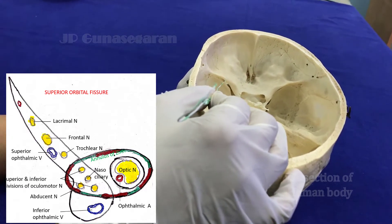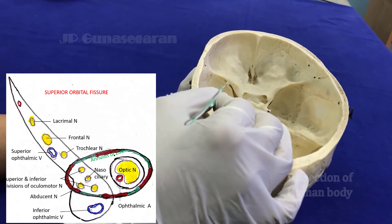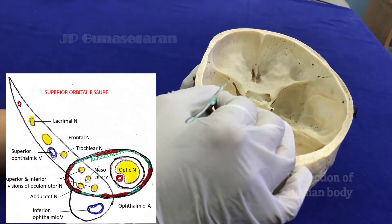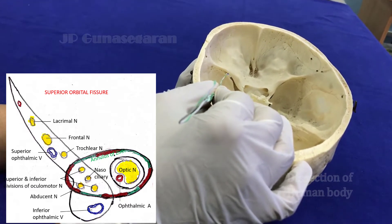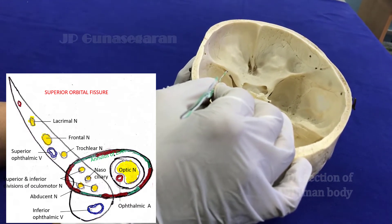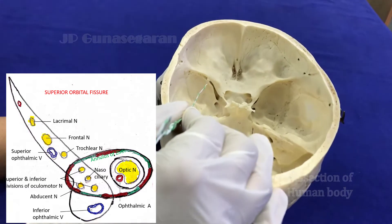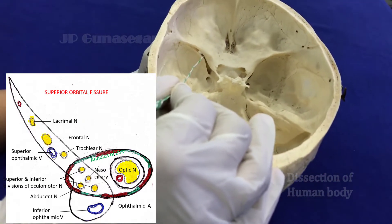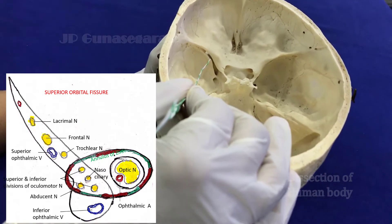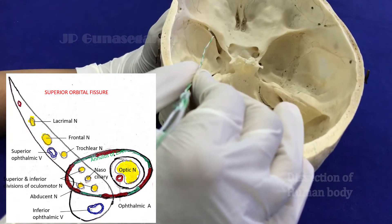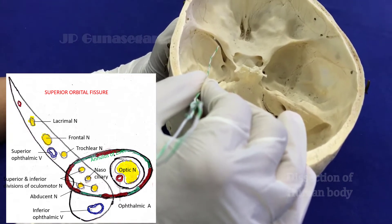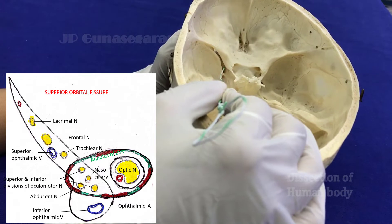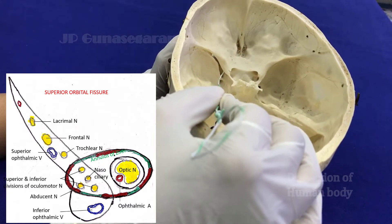The superior orbital fissure transmits, on its lateral compartment: the lacrimal nerve, frontal nerve, trochlear nerve, recurrent meningeal branch of the lacrimal vessels, and superior ophthalmic vein. In the intermediate compartment, it transmits the nasociliary nerve, abducens nerve, and superior and inferior divisions of the oculomotor nerve. In the medial compartment, it will transmit the inferior ophthalmic vein.